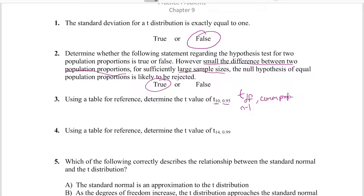If you find a cumulative probability of 0.95, remember this isn't going to be a two-tailed test — it's a cumulative probability going from negative infinity to that value, so it's a one-tailed test. When we go to the table, find degrees of freedom 10 and find our cumulative probability of 0.95 using the one-tailed column. You'll find our t-value, which is our t-critical value at this point, and it's going to be 1.812.